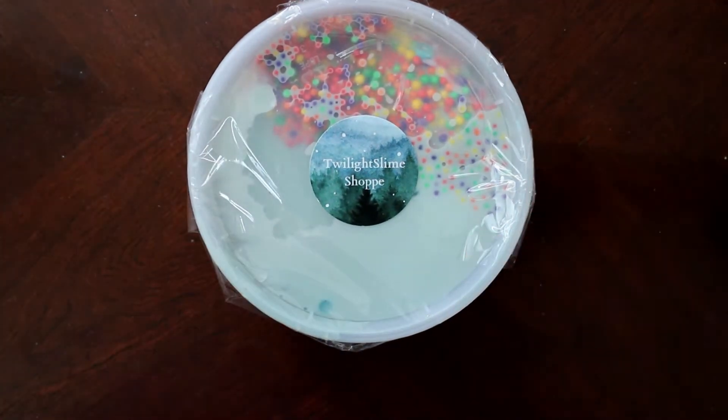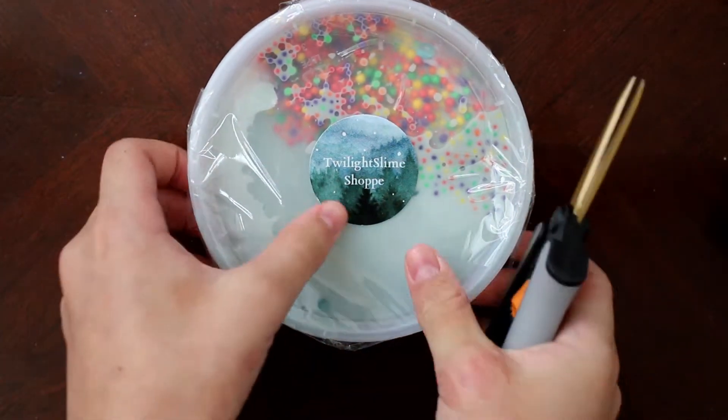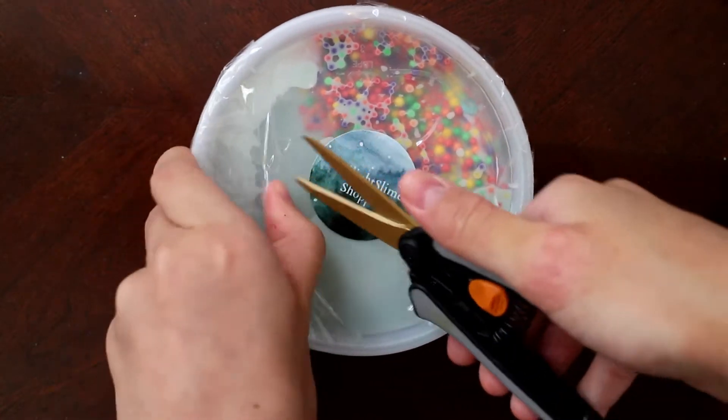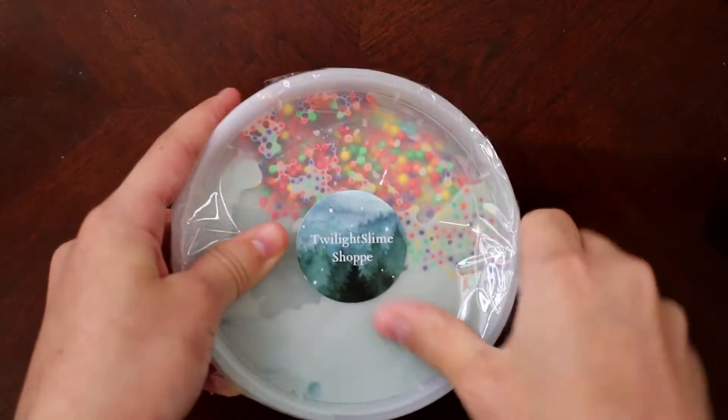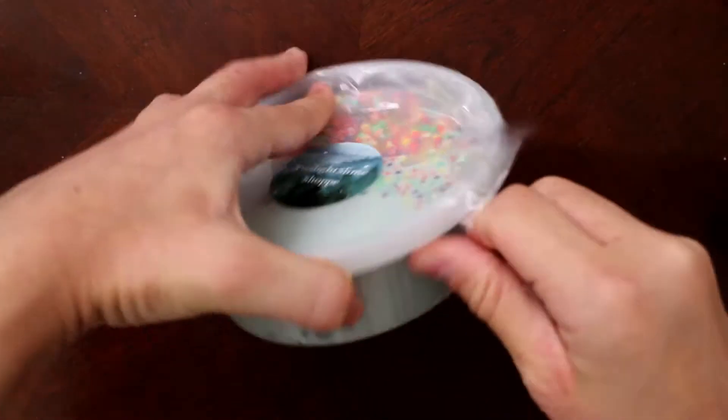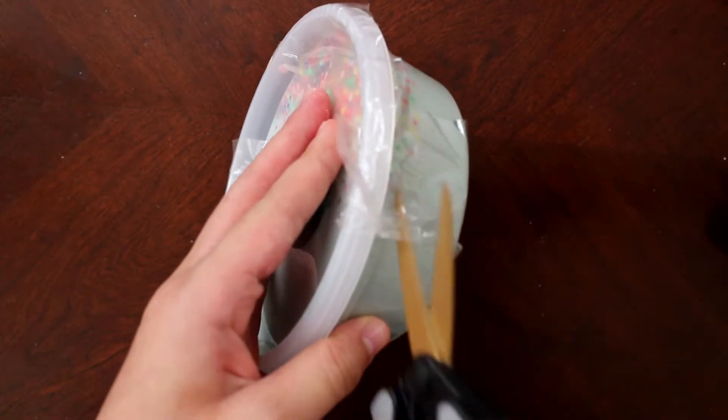So the first slime that they sent me is called Somewhere Over the Rainbow, and it's $12 not including shipping. Just so you know, I'm not including shipping with the prices of any of these slimes because shipping does vary depending on where you live.